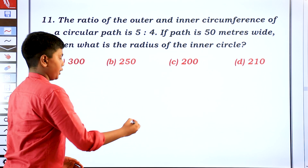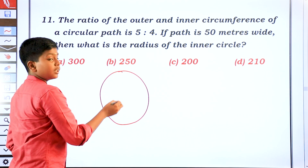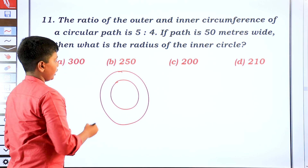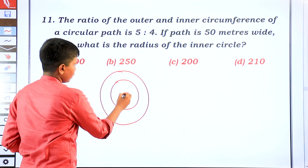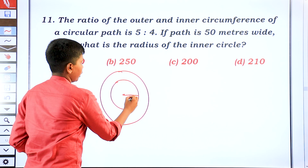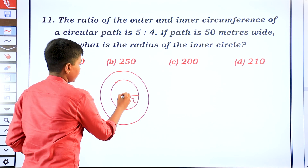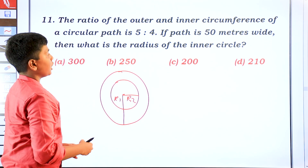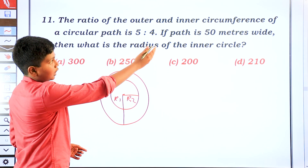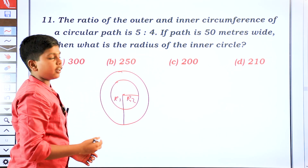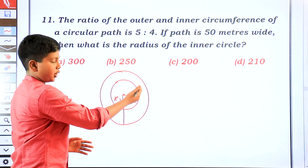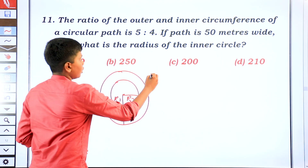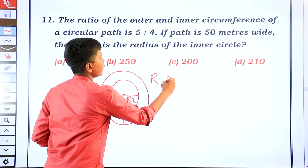There is an outer circle and an inner circle inside it. The radius of the outer circle is R1 and the radius of the inner circle is R2. Since circumference is proportional to radius, the ratio of circumferences equals the ratio of radii, so R1 is to R2 equals 5 is to 4.